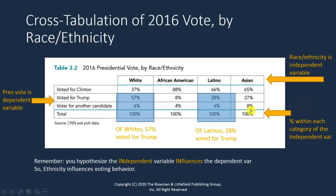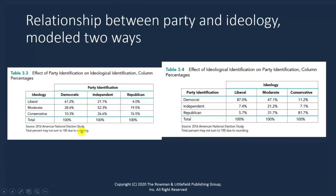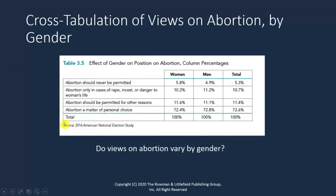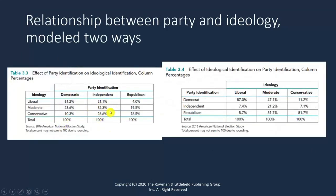We could very easily switch the percentages to be in the other direction, and that would be interpreted very differently. Here we've got tables arranged with the same data, but the data are arranged differently. The 100% in both tables are within the columns, but what is in the columns is switched. Here we have ideology and party identification. In table 3.3, we're answering the question: of Democrats, what percentage are moderate? 28% of Democrats are moderate, 52% of independents are moderate, and only 20% of Republicans are moderate.